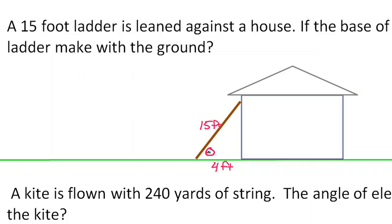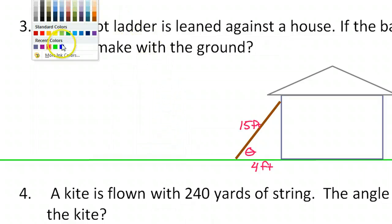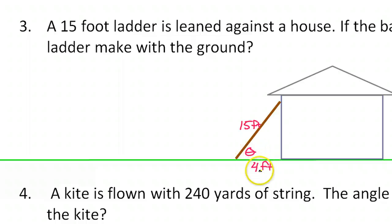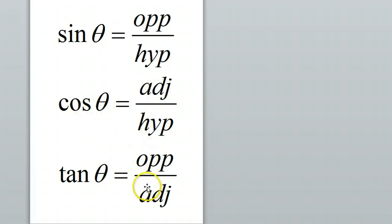If you want to find the angle, you find angles using inverse trig functions. But first we need to decide which function to use. From the perspective of this angle, this four feet is adjacent, and the ladder here is the hypotenuse. So adjacent and hypotenuse — that's the cosine function.